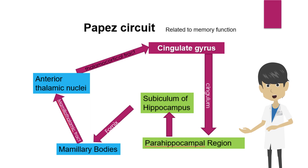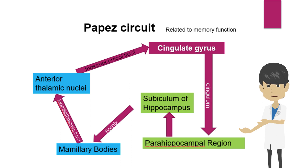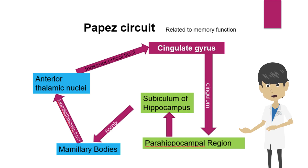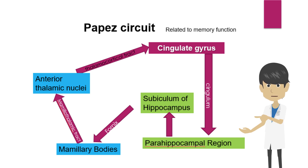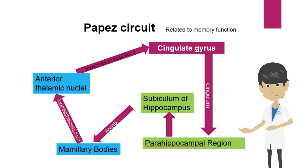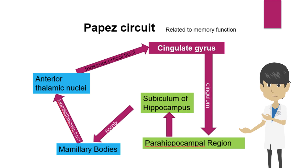For example, in the Papez circuit, which is known as a memory circuit, the hippocampus is connected to the mammillary body via the fornix, to the anterior thalamic nucleus via the mammillothalamic tract, to the cingulate gyrus via the thalamocortical tract, to the parahippocampal gyrus via the cingulum, and from the parahippocampal gyrus to the subiculum of the hippocampus.